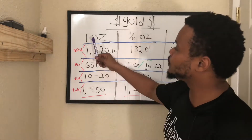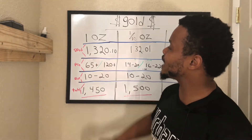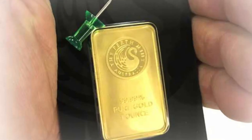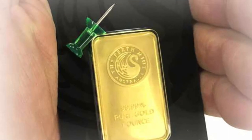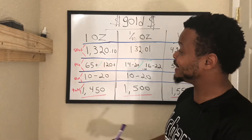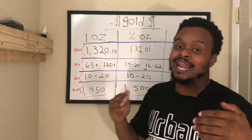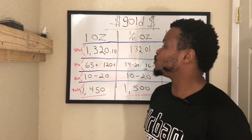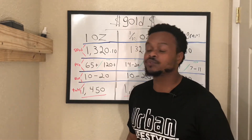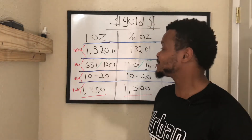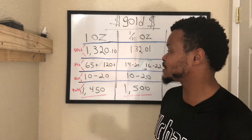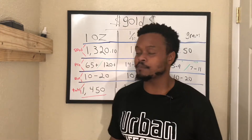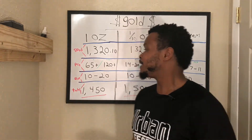One ounce of gold — the spot price when I last did my check — is actually $1,320.10. That's the spot price.